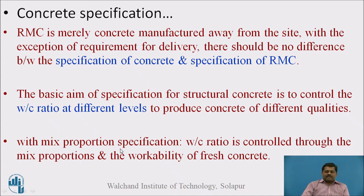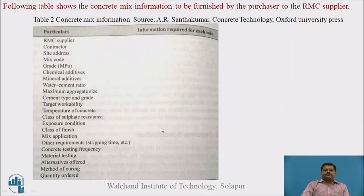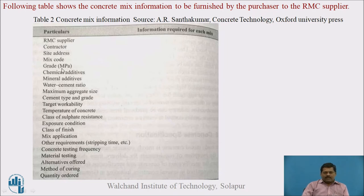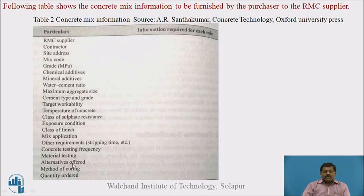Mix proportion specification is one way through which water-cement ratio is controlled and workability of fresh concrete can be assured. The following table shows the concrete mix information to be furnished by the purchaser to the RMC supplier. Important items include: grade, chemical additives, mineral additives, water-cement ratio, maximum aggregate size, target workability, workability retained on site, exposure condition, concrete testing frequency, and any alternatives offered. According to this information, you can assess the concrete on your site.